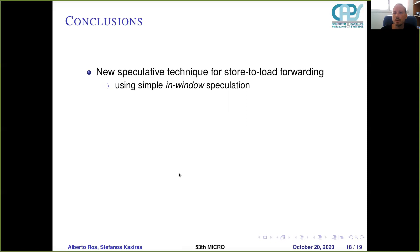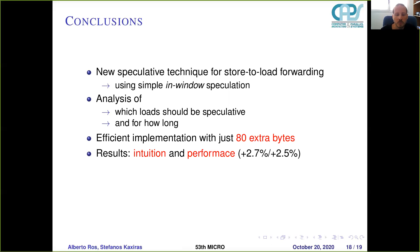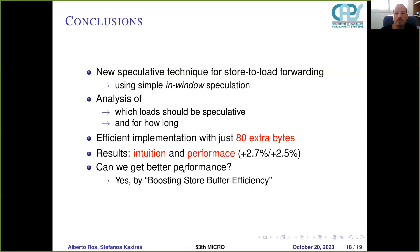To conclude, we have proposed new speculative techniques for store-to-load forwarding using simple in-window speculation, never after retirement. We analyze which loads should be speculative and for how long, and we have an efficient implementation that requires only 80 extra bytes. The result is an intuitive and performant implementation of a memory consistency model. Could this implementation get even better performance? Yes — if the store buffer is made more efficient, stores will write to cache earlier and the retired gate will be closed for less time. If you want to see how we can boost store buffer efficiency, I invite you to see the next paper in the session.